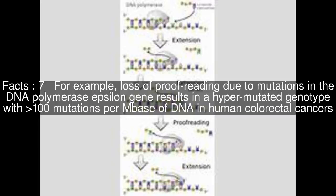For example, loss of proofreading due to mutations in the DNA polymerase epsilon gene results in a hypermutated genotype with greater than 100 mutations per megabase of DNA in human colorectal cancers.